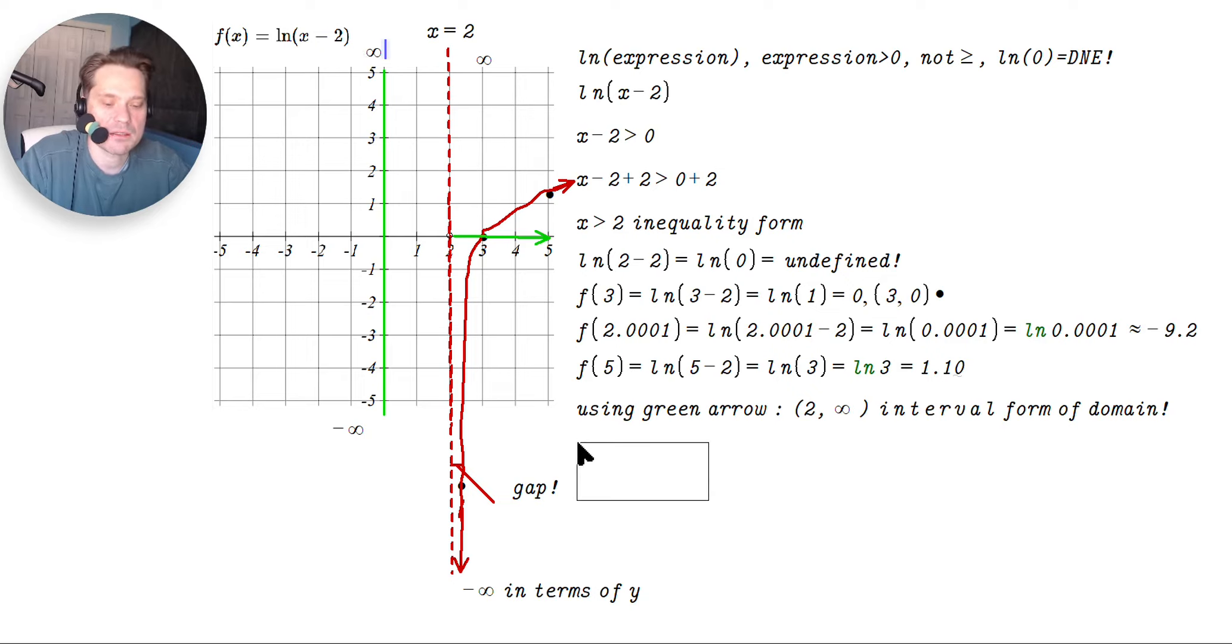And that means any value of y from negative to positive infinity can be reached. So that means that the range is negative to positive infinity. This is the interval form like this of the range. This is the domain form of the range. And x equals 2 is the equation of the vertical asymptote this way.